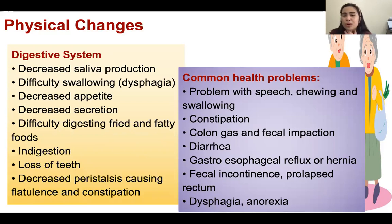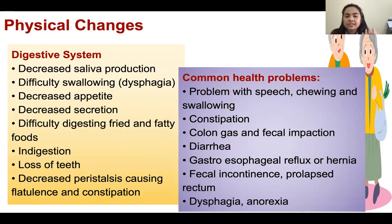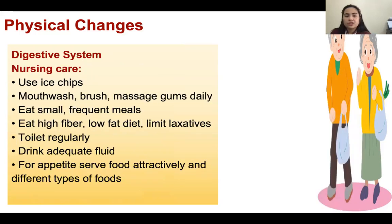For the digestive system, they might have problems with chewing and swallowing — that's why they always ask for soft food — as well as constipation, colon gas, fecal impaction, diarrhea, reflux or hernia, fecal incontinence, prolapsed rectum, dysphagia, and anorexia.